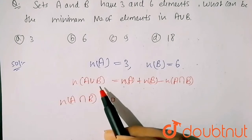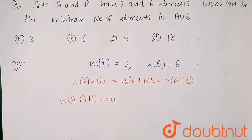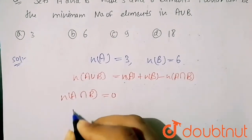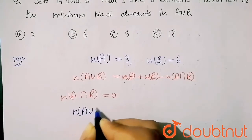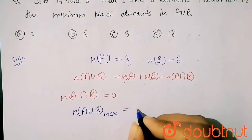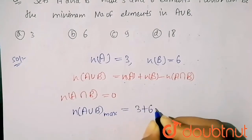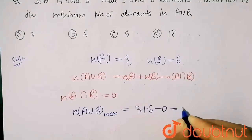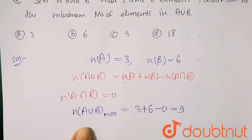So here I will put the value. My n(A∪B), my maximum number of elements, so three plus six minus zero, it means nine. So I got that maximum number of elements in A union B is nine.